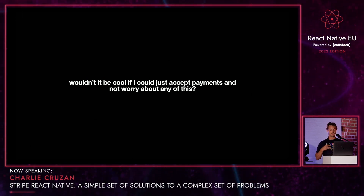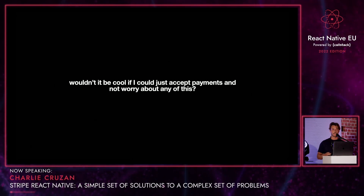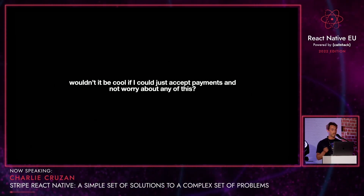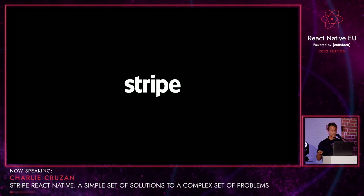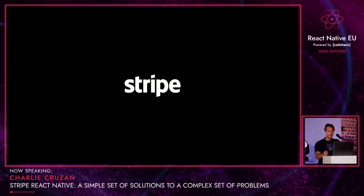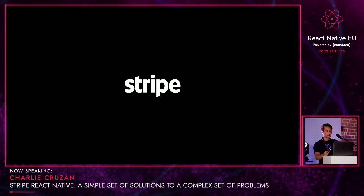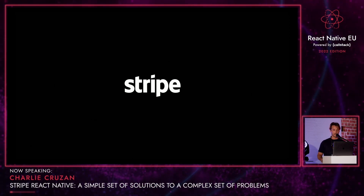Let's assume for the sake of this talk that you'd rather not spend all your time reading financial institution documentation. Wouldn't it be cool if we could just accept payments and not really worry about any of that stuff? Spoiler — that's exactly what Stripe attempts to do for you, and I think we actually do it pretty well. I am heavily biased. So let's go through some examples of what Stripe React Native does and you can decide for yourself whether or not it's useful.